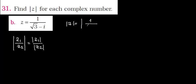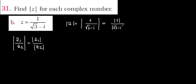So the modulus of z is equal to the modulus of 1 over (root 3 minus i), which equals the modulus of 1 over the modulus of (root 3 minus i).